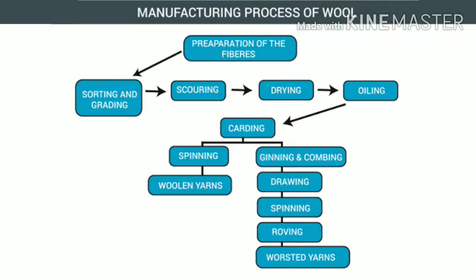Third step: sorting. The process of separating the fleece of a sheep into sections according to the quality of woolen fibres, such as fine, coarse, long, short, etc., is called sorting. Fourth step: dyeing.